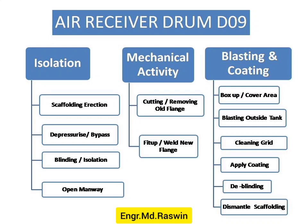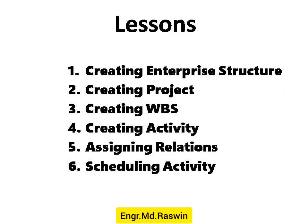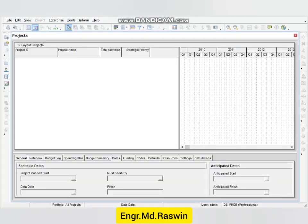In this lesson, we are going to create an enterprise structure named Rasswin Contracting Company, then create a new project, then create WBS, and then create activities under each WBS. Then we will assign relations and schedule them.